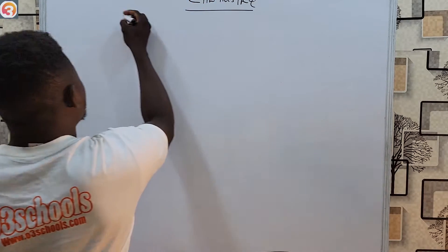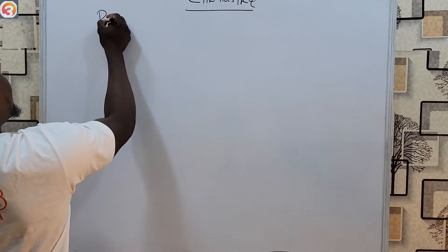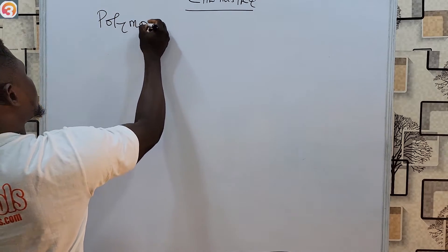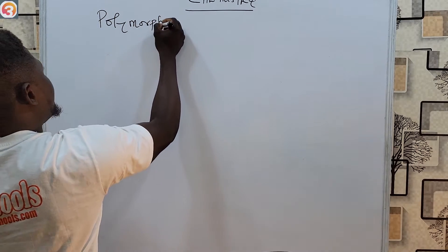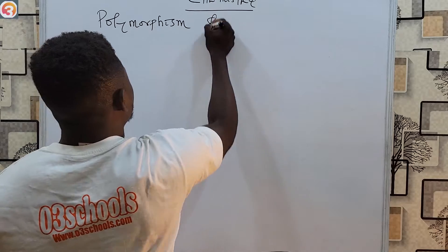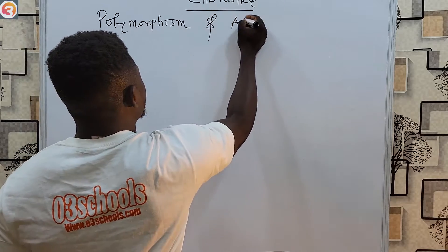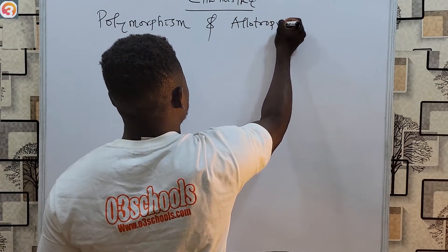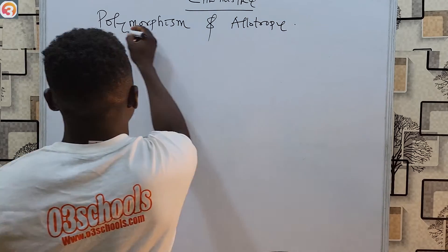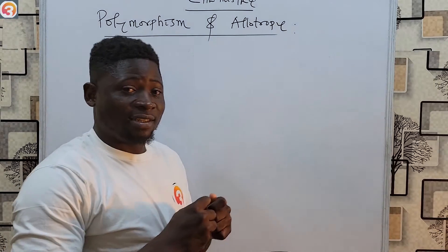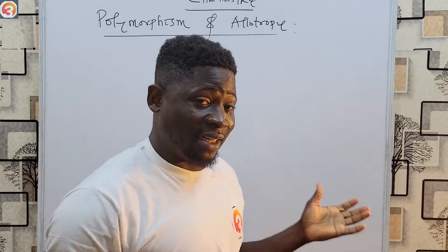We are going to be looking at polymorphism and allotropy. These are very easy concepts that you will understand easily.